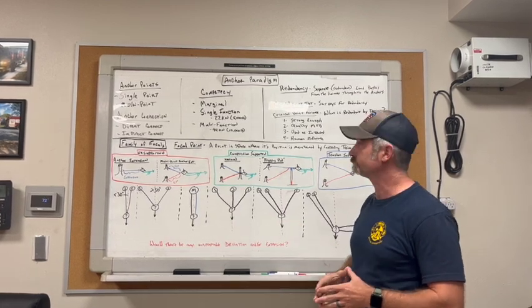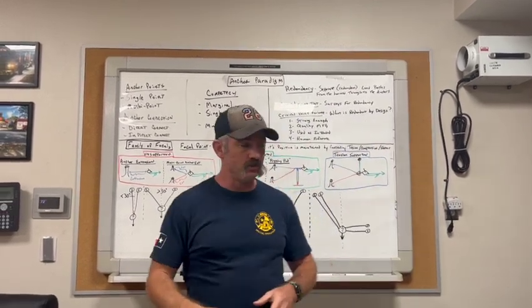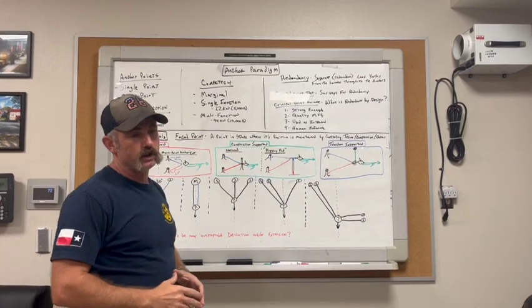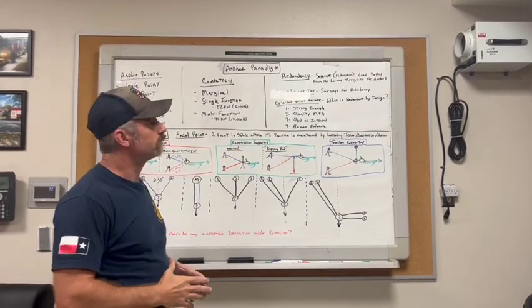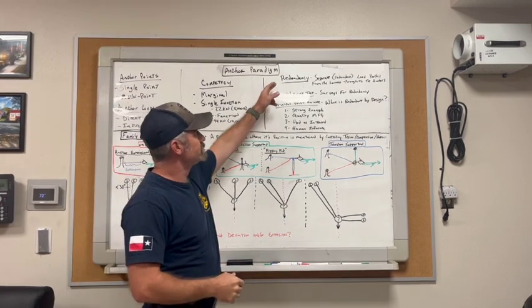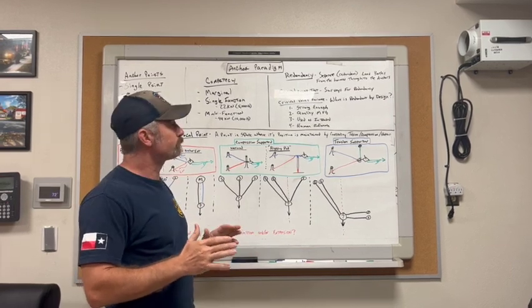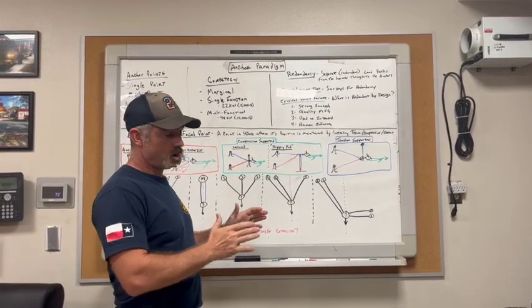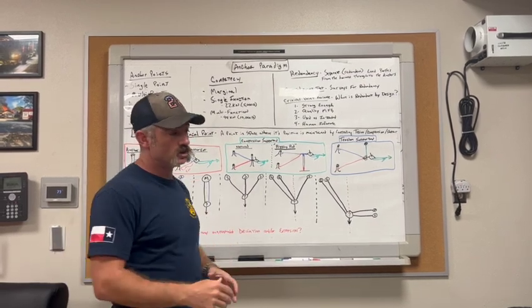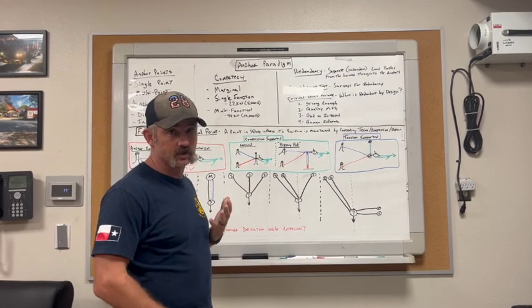This paradigm is intended to really clearly define how we achieve redundancy, and we value redundancy in our systems. The specific definition of redundancy is that there is a separate, i.e. a redundant, a separate load path from the harness through to the connection to the anchors. The harness, as it pertains to a rescuer, would be just their rope access harness.